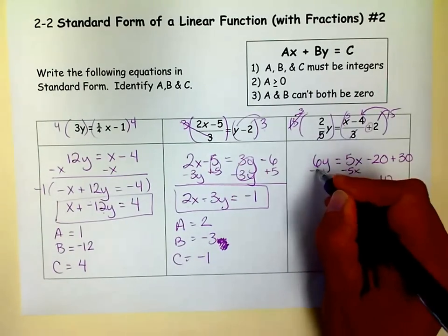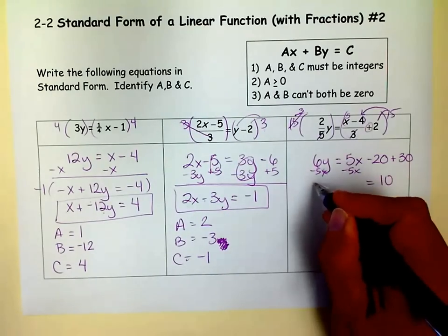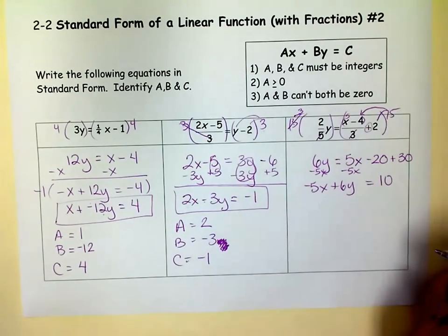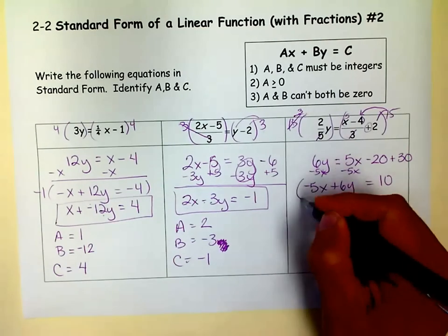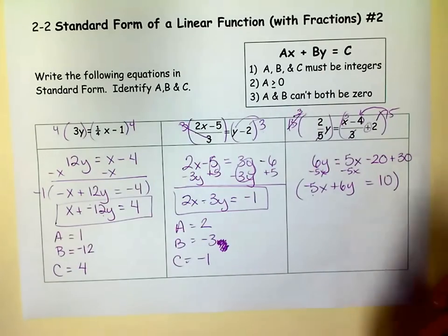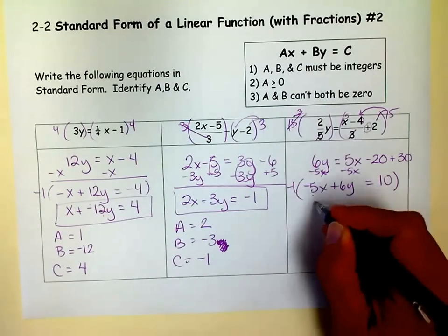And we can minus this to the other side. Because we need to get our x's and y's on the same side. So we get negative 5x plus 6y equals 10. Well, no fractions. X and y on the same side. But we need to get rid of that negative sign. Because it says A has to be greater than or equal to 0. So it can't be negative. So we multiply by negative 1. And that just changes all the signs.